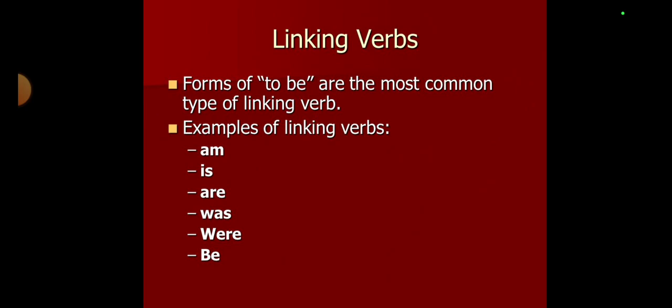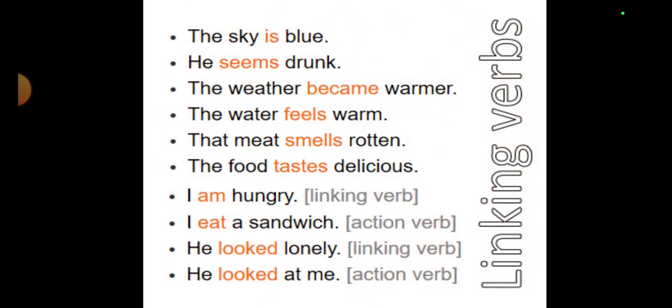As I was telling you, linking verbs can occur in two situations. First, the different forms of 'be': is, am, are, was, were, and be. Second, there are other words that can also be linking verbs, such as: seems, became, feel, smell, taste. Remember, you have to check whether the verb is performing an action or not. If it is not performing any action, it is definitely a linking verb.